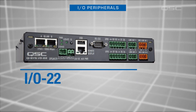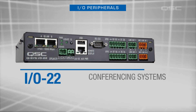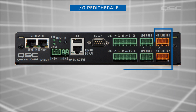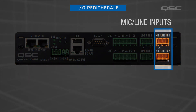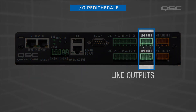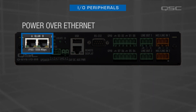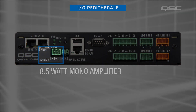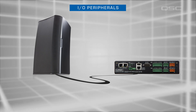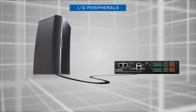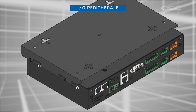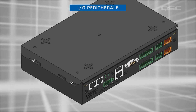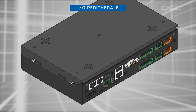Similar to the I.O. 8 Flex, the I.O. 22 is a compact stand-alone I.O. box that provides two mic line inputs and two line outputs, is powered over Ethernet, and also includes an 8.5 watt mono amplifier to drive a local monitor speaker. This device is compact in size, which allows for hideaway mounting locations such as under a desk or attached to a rack tray.